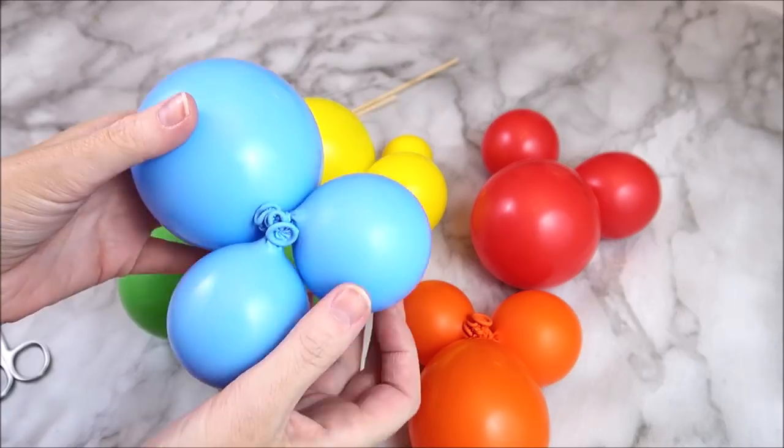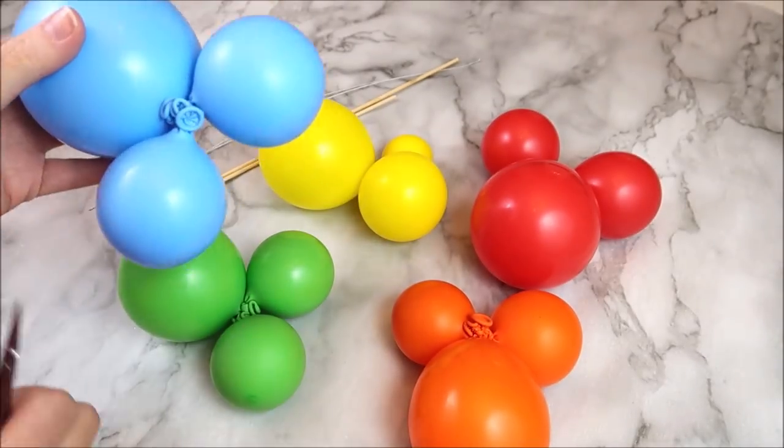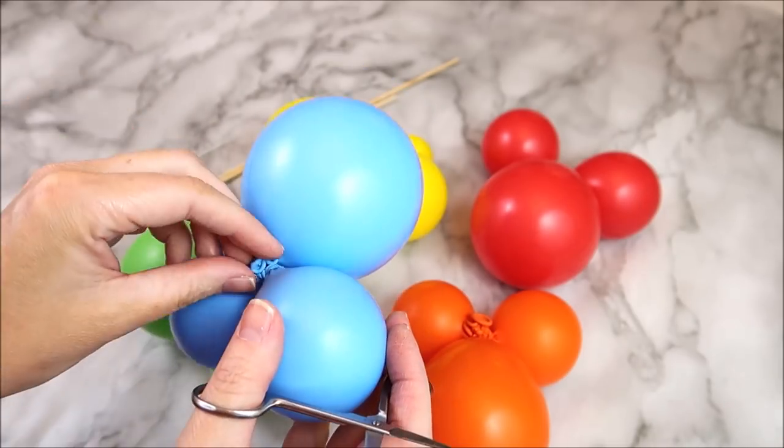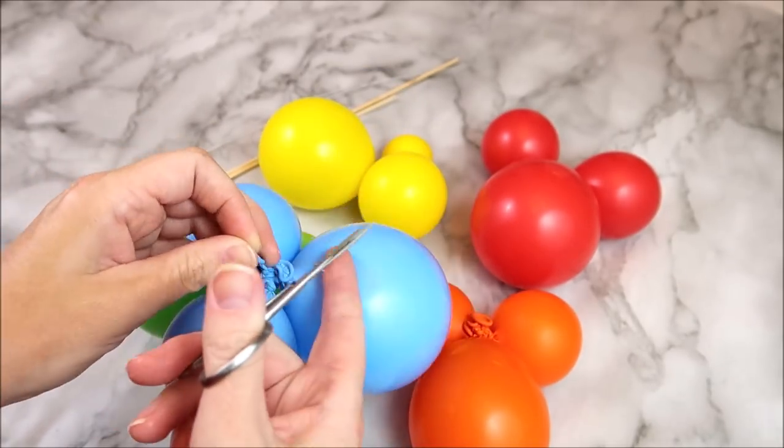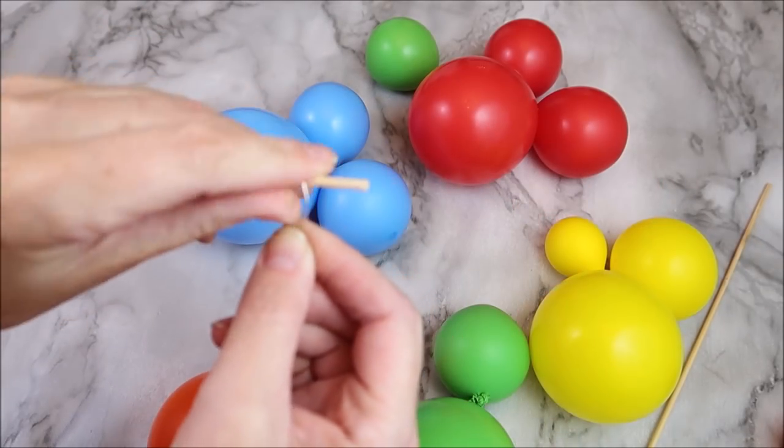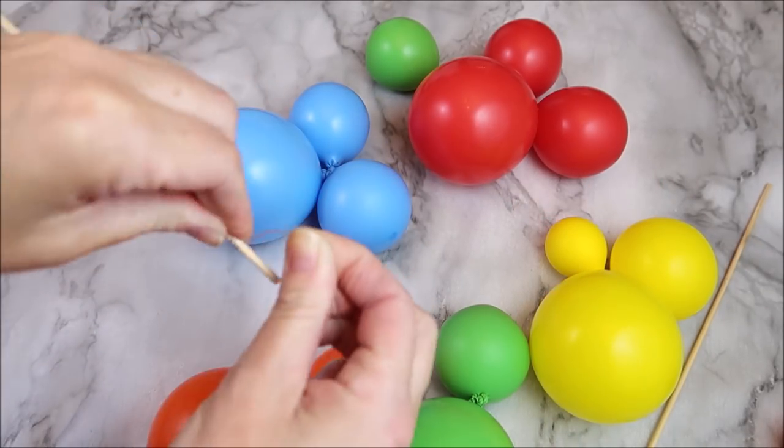So now I've got all my clusters and the last thing you're going to need if you're really picky is to cut off those ends. I didn't really bother doing this - I just made sure they weren't visible. But if you're really fussy, go ahead and cut off the ends of your balloon.